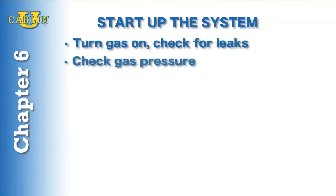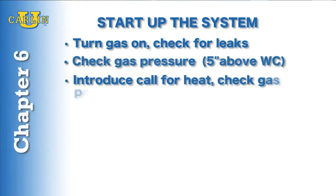With all the other gas appliances turned on, check the gas pressure to verify that the inlet pressure stays consistent above 5 inches of water column. Introduce a call for heat and check the manifold gas pressure. The regulator should be set at 3.5 inches.